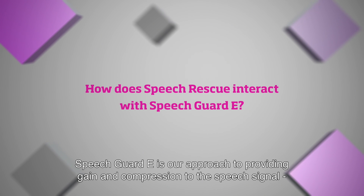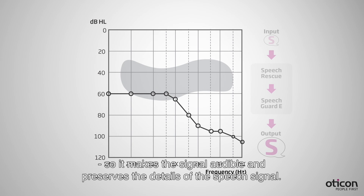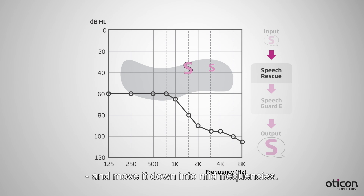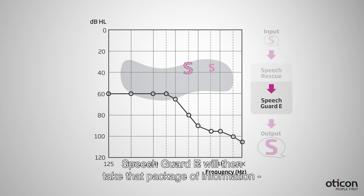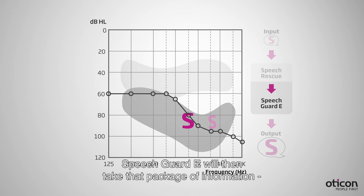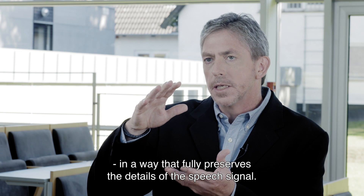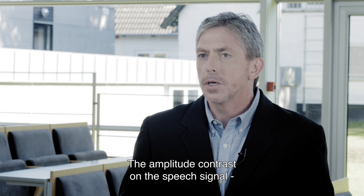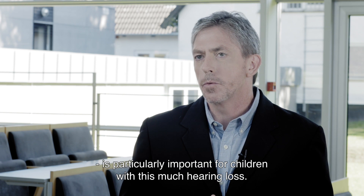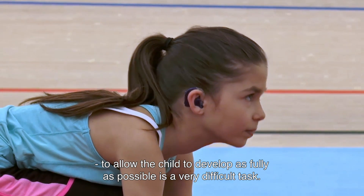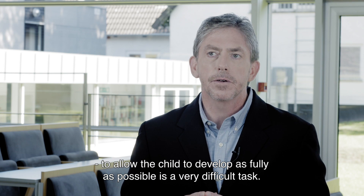Speech Guard E is our approach to providing gain and compression to the speech signal in a way that makes the signal audible, but also preserves the details of the speech signal. Speech rescue will find important high frequency speech information and move it down into the mid frequencies. Speech Guard E will then take that package of information and place it within the remaining auditory dynamic range of the child in a way that fully preserves the details of the speech signal. The amplitude contrast in the speech signal is particularly important for children with this much hearing loss. Getting speech information to that child's cognitive system to allow the child to develop as fully as possible is a very difficult task.